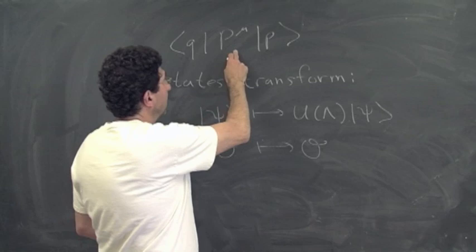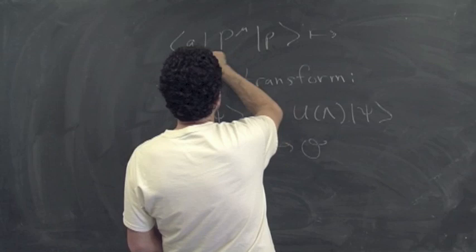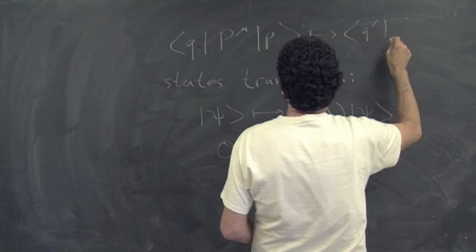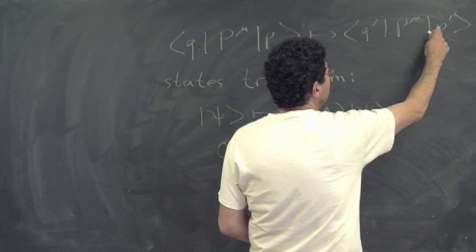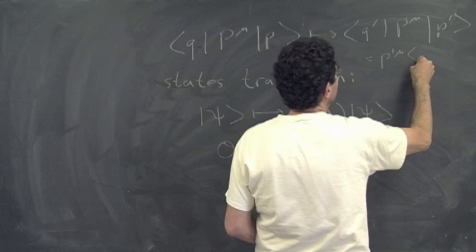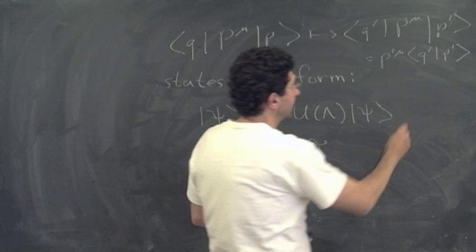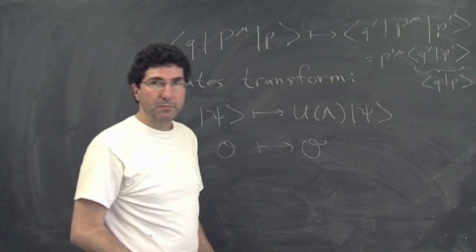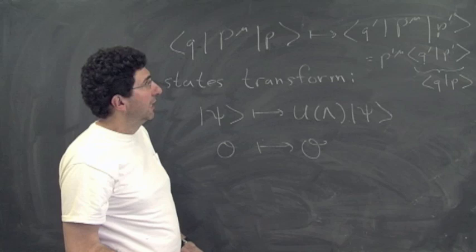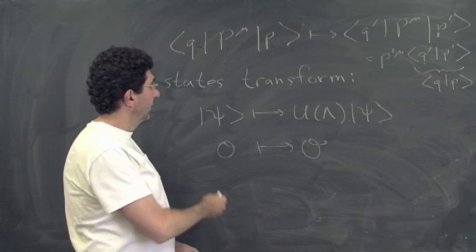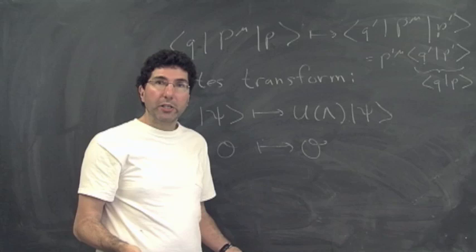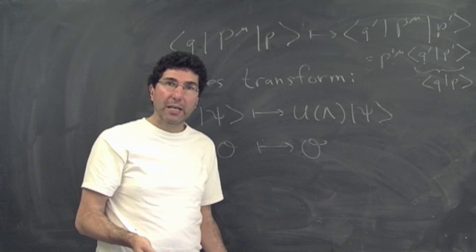This picture where states transform but operators do not is the Schrödinger picture for Lorentz transformations. This is not a misuse of that term, because for theories with time translation symmetry, time translation is both a symmetry and time evolution. In Schrödinger picture, time translation acts on the states — the states evolve with time and the operators do not.